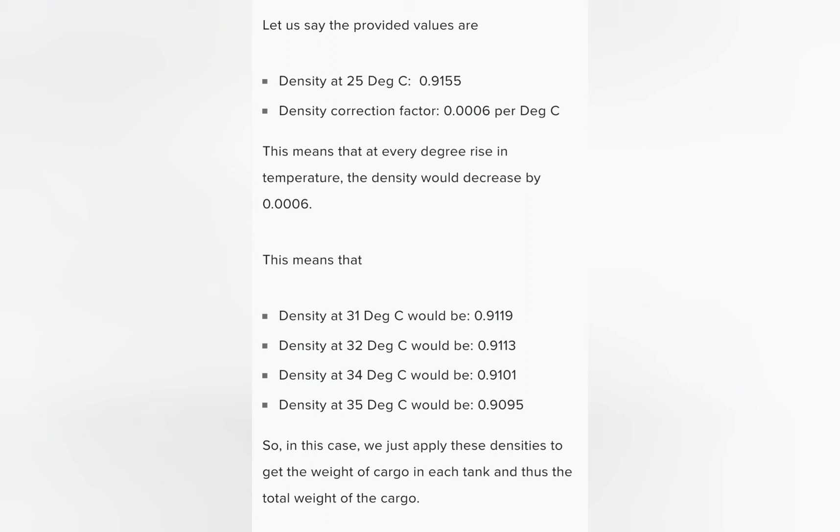This means that density at 31°C would be 0.9119 and the density at 32°C would be 0.9113. Density at 34°C would be 0.9101 and similarly density at 35°C would be 0.9095. So in this case we just apply these densities to get the weight of cargo in each tank and thus the total weight of the cargo.